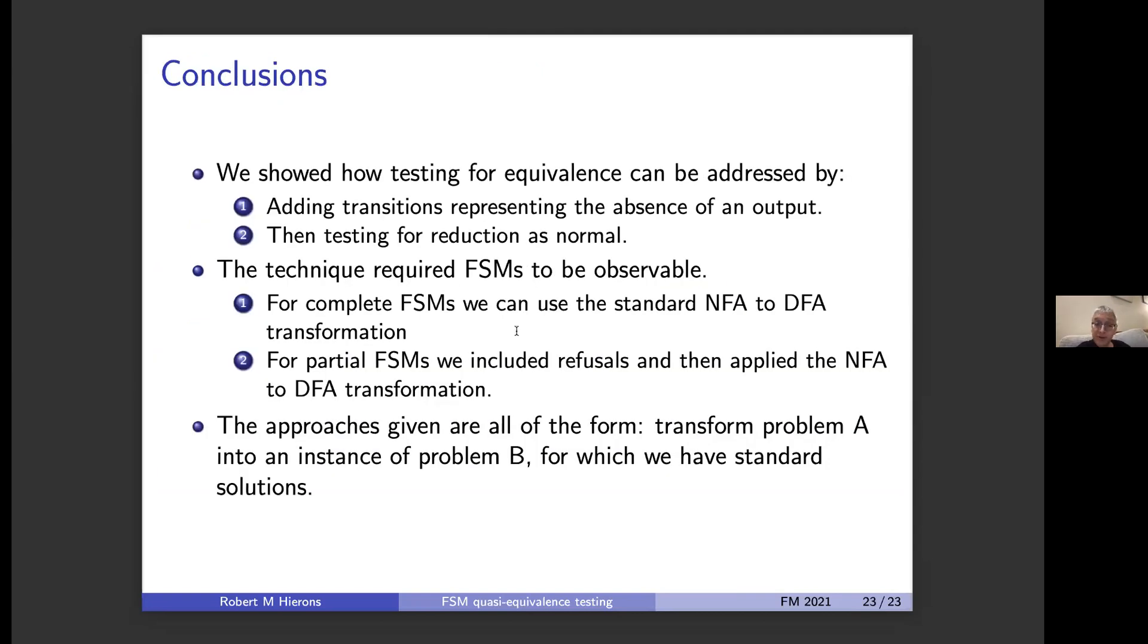I think I've pretty much run out of time, but I've also pretty much run out of slides. So really, this work shows how certain testing problems for finite state machine testing can be addressed. They're problems that haven't been addressed much in the literature. There are relatively few techniques, and where there are techniques, they tend to be quite involved. Really, it's an instance of a type of solution that maybe could be applied more in testing but would be much more familiar in certain other areas, where essentially we take our problem, we transform it into another problem for which we can solve. And that's it. Obviously, proofs and such are in the paper.